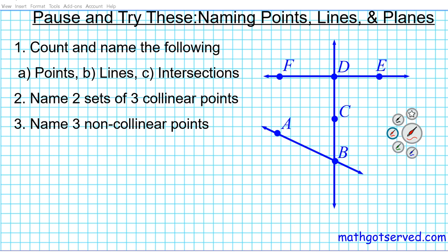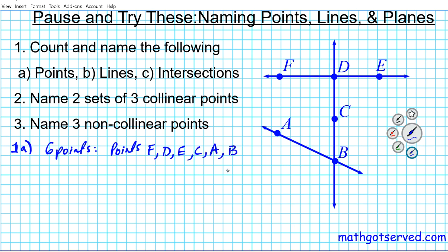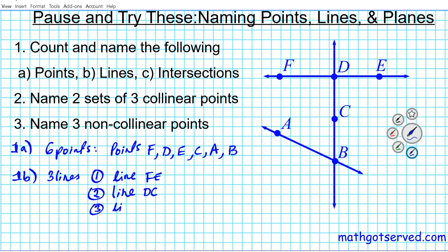Welcome back. For the first one, 1A — let's count all the points: one, two, three, four, five, six — so there are six points. They are points F, D, E, C, A, B. For 1B, lines — there are three lines. The first line you can call line FE, then we have line DC, and lastly line AB.